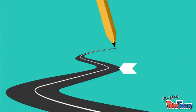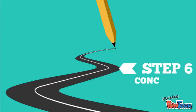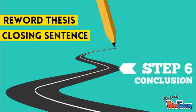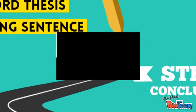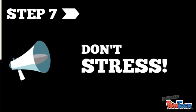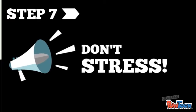Finally, you're almost to the end of writing your expository essay. There's only one more thing left to do, which is write your conclusion. Here you will reword your thesis and add a closing sentence or two that summarizes your entire essay for your reader. And don't stress — follow the seven steps to writing an expository essay and you'll have nothing to worry about.